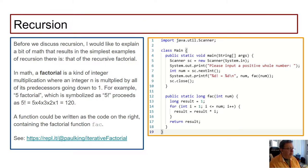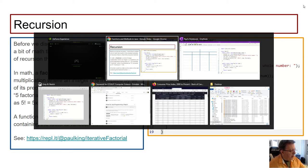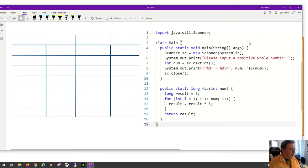Recursion has this property where a function or a procedure calls itself — that's the idea of recursion. But before we go into recursion, we'd like to talk about a little bit of math, and we're going to talk about the factorial.